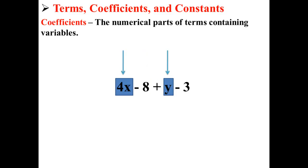This expression also has coefficients, which are the numerical parts of the terms containing variables. So here, the coefficient of 4x is 4, and the coefficient of y is 1. We know we don't write the 1, because we just have 1y, but the actual coefficient there is 1.